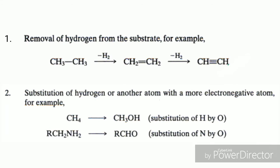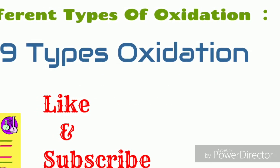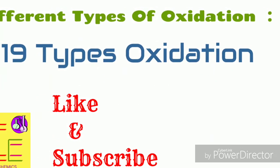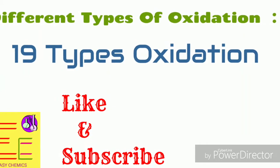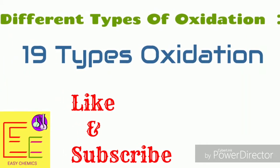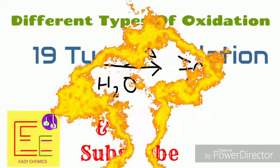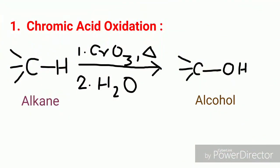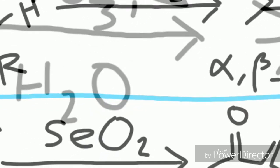Now let's take a look at the different types of oxidation. Today I will discuss a total of 19 types of oxidation. First is chromic acid oxidation. In this reaction, the C–H bond of an alkane is converted to C–OH, that is to alcohol, by chromic acid with heat and slight addition of water.